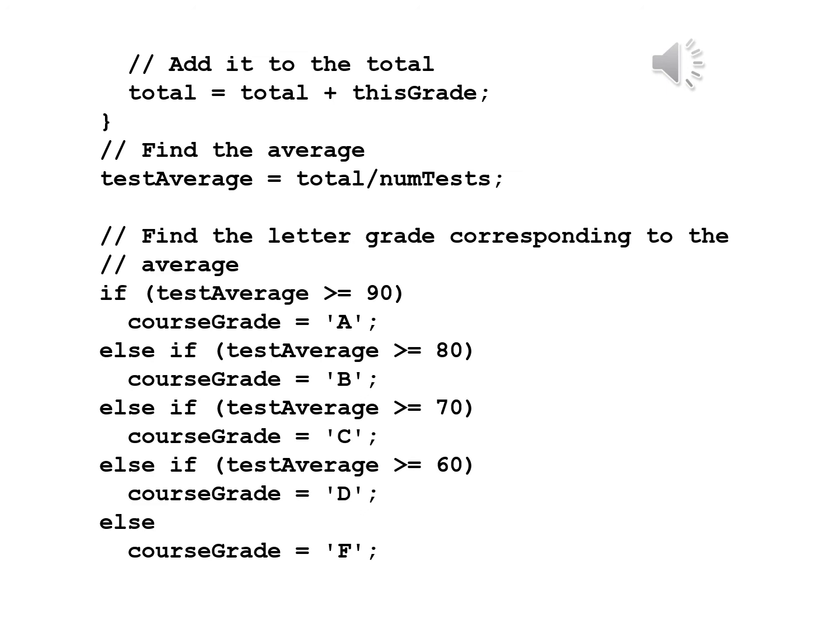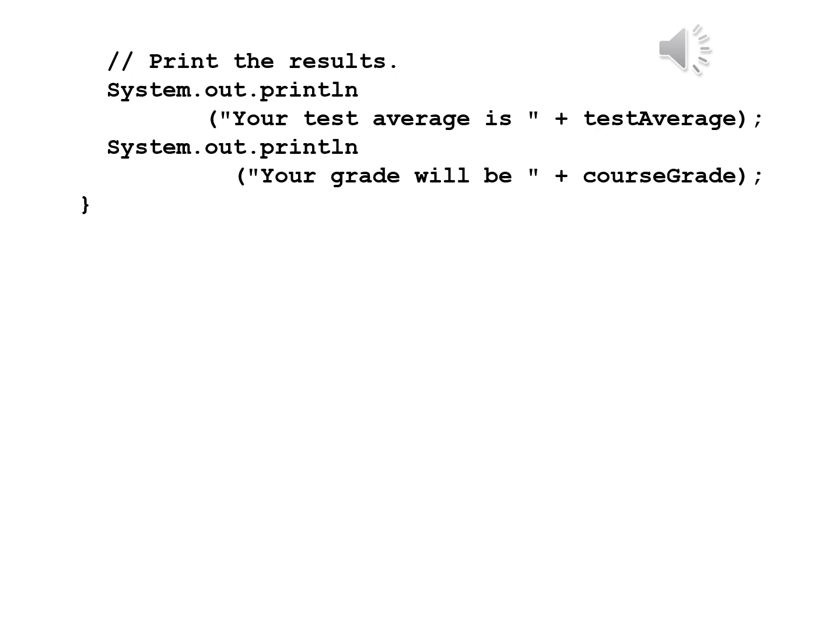Now find the letter grade corresponding to the average. If testAverage is greater than or equal to 90, courseGrade equals 'A'. Else if testAverage is greater than or equal to 80, courseGrade equals 'B'. Else if testAverage is greater than or equal to 70, courseGrade equals 'C'. Else if testAverage is greater than or equal to 60, courseGrade equals 'D'. Otherwise, courseGrade equals 'F'. Note that the conditions are in parentheses and the letters A, B, C, D, and F are in single quotes because they are single characters.